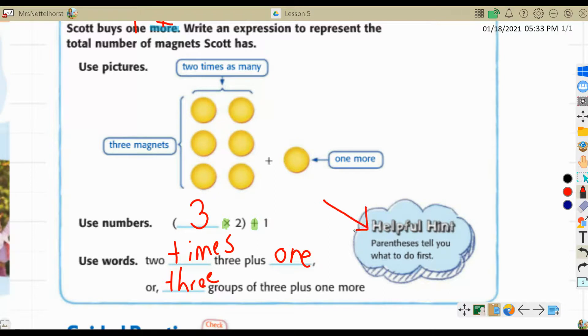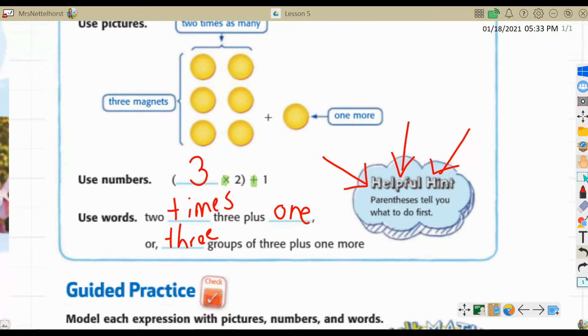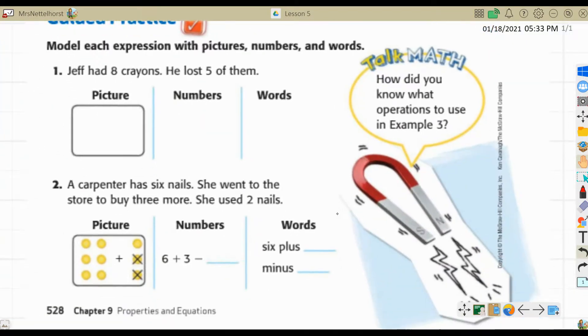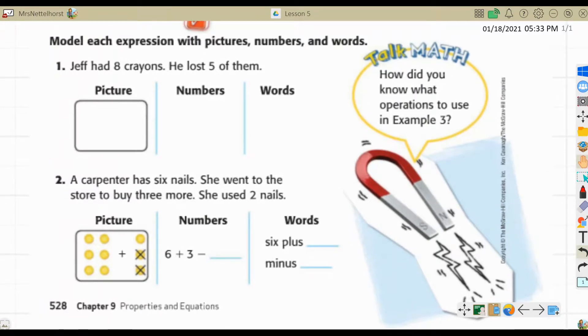Our helpful hint is parentheses tell you what to do first. I want you to draw one, two, three arrows at this hint for two reasons. One, to help you remember, it's super important. Parentheses tell you what to do first. And two, that's the Easter egg for my class for their extra credit points. Let's go down and do some guided practice. Remember, I will explain it to you. Then you will pause the video, put in your answers, and then unpause the video, check to see if you're right. If you're not right, then you're going to fix it.